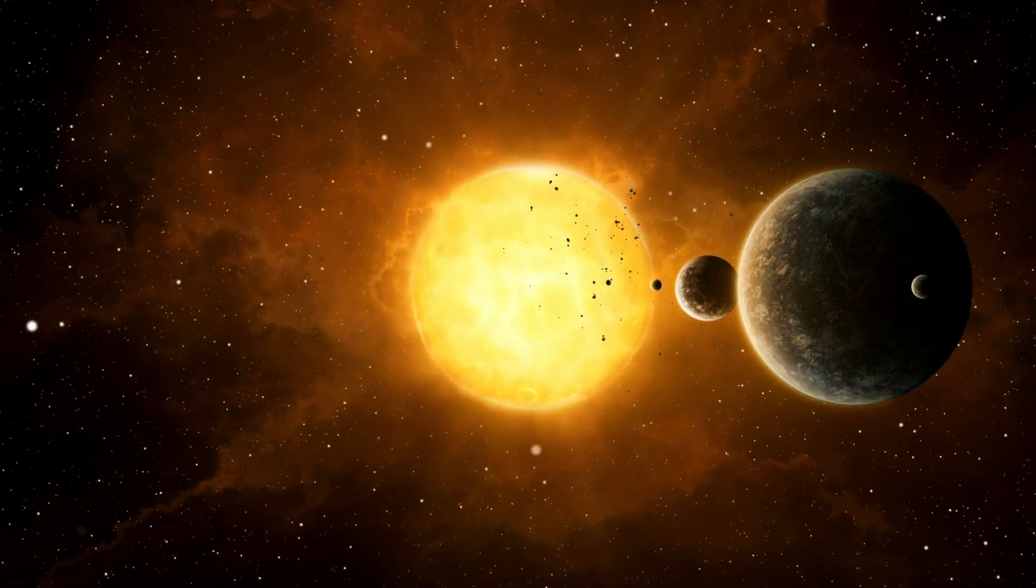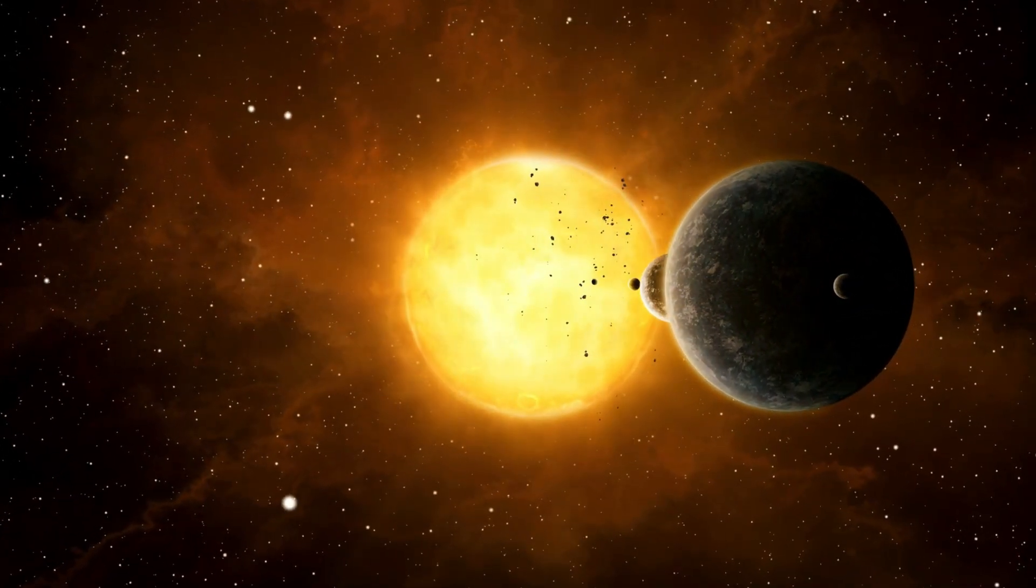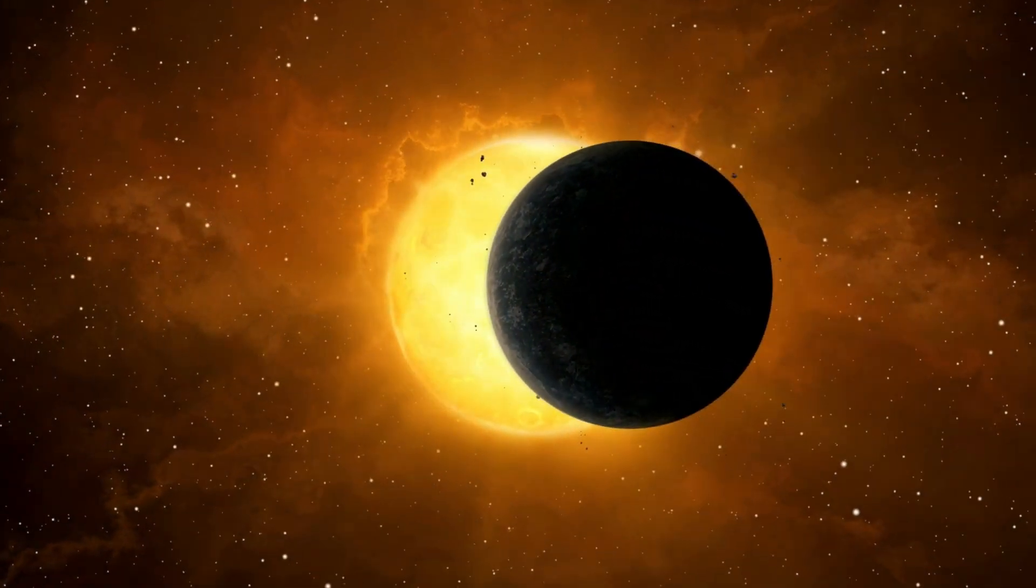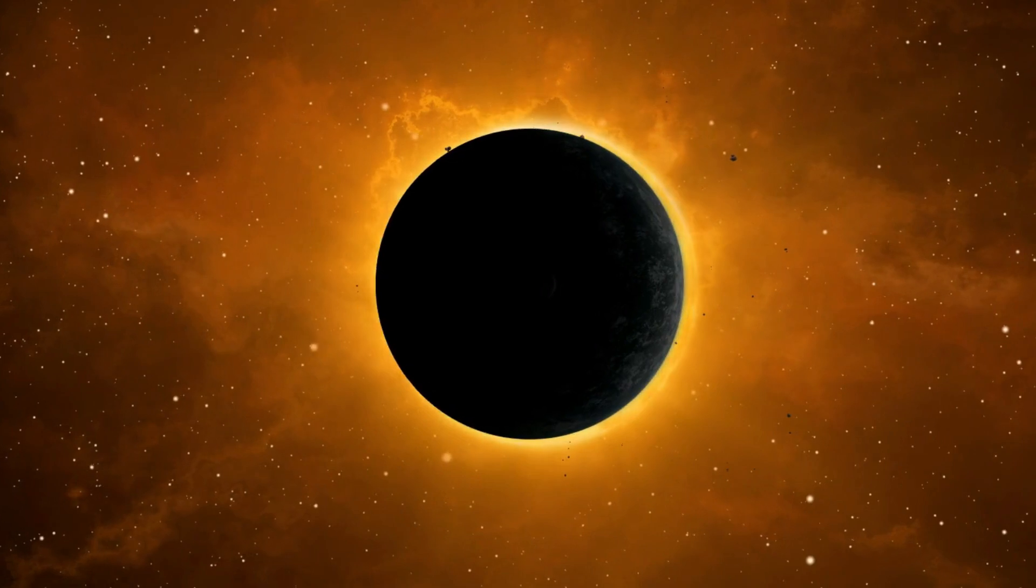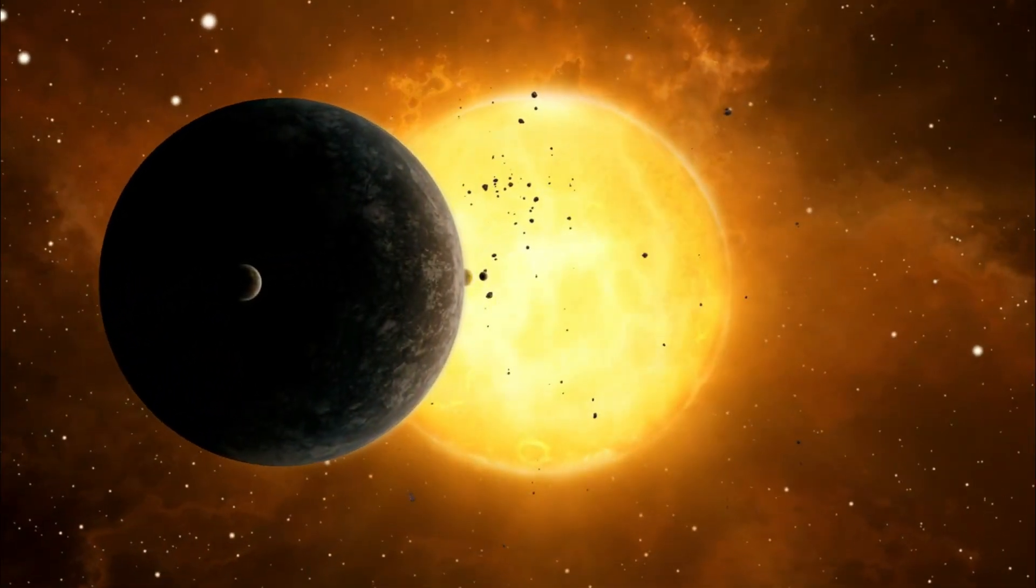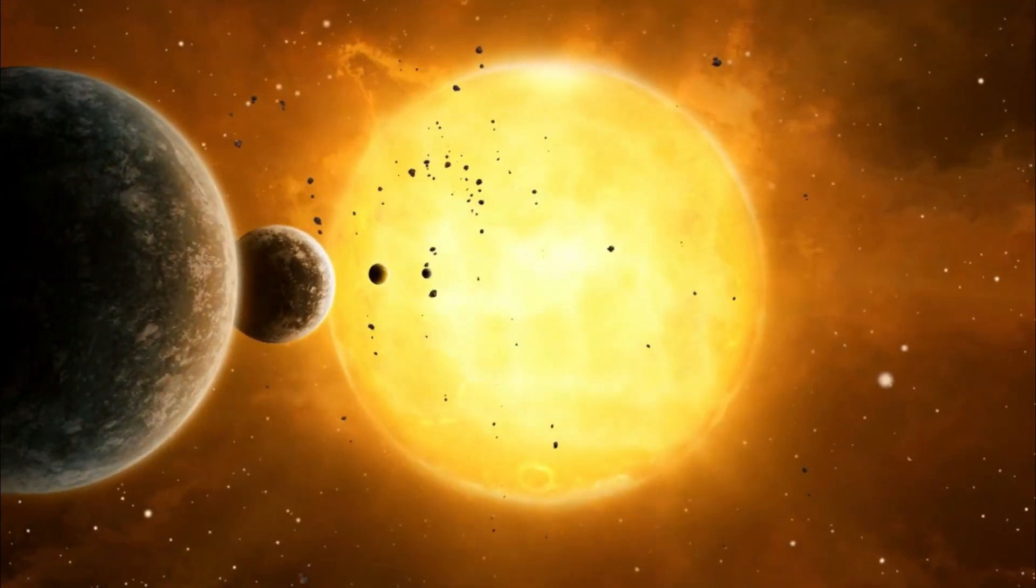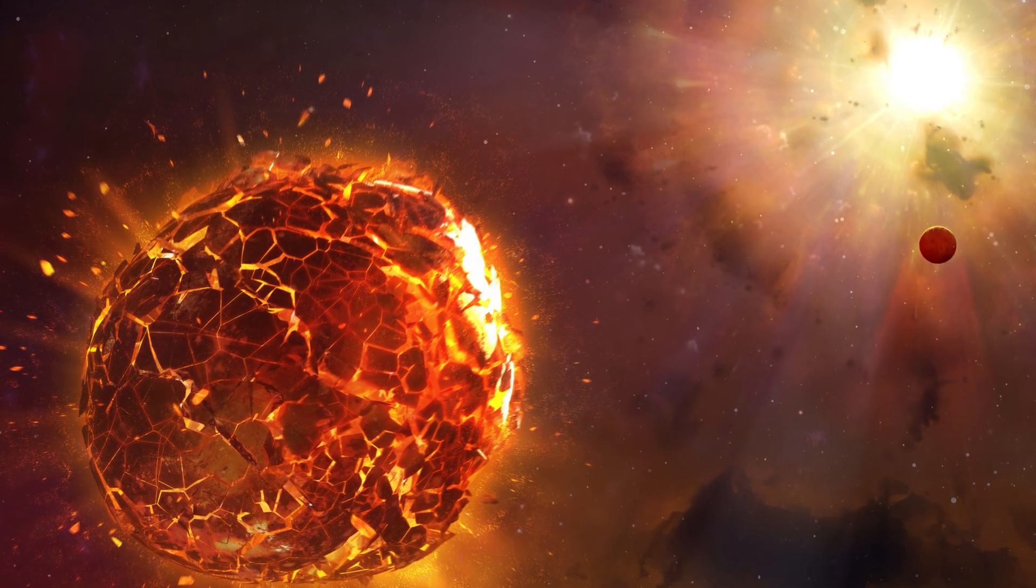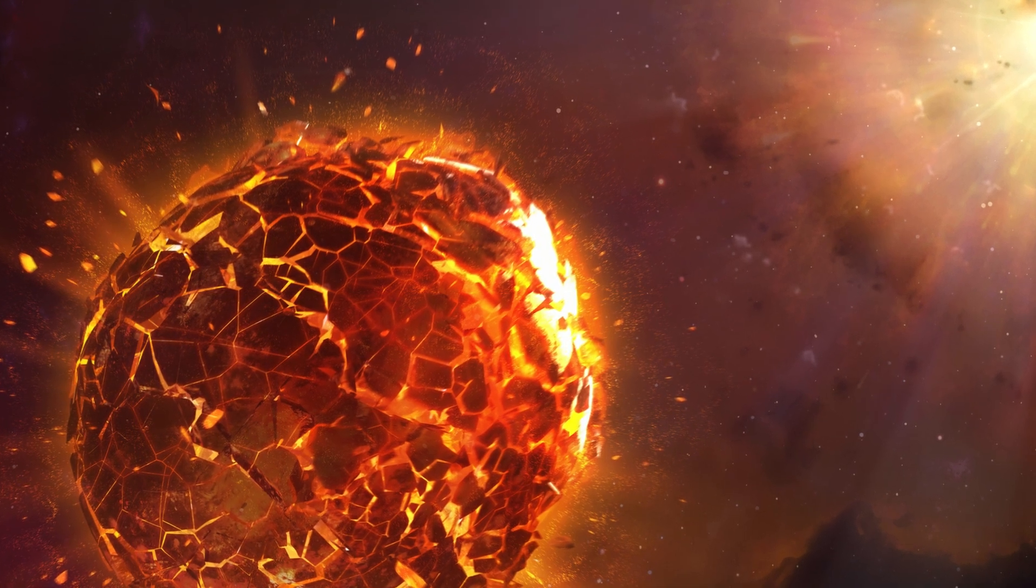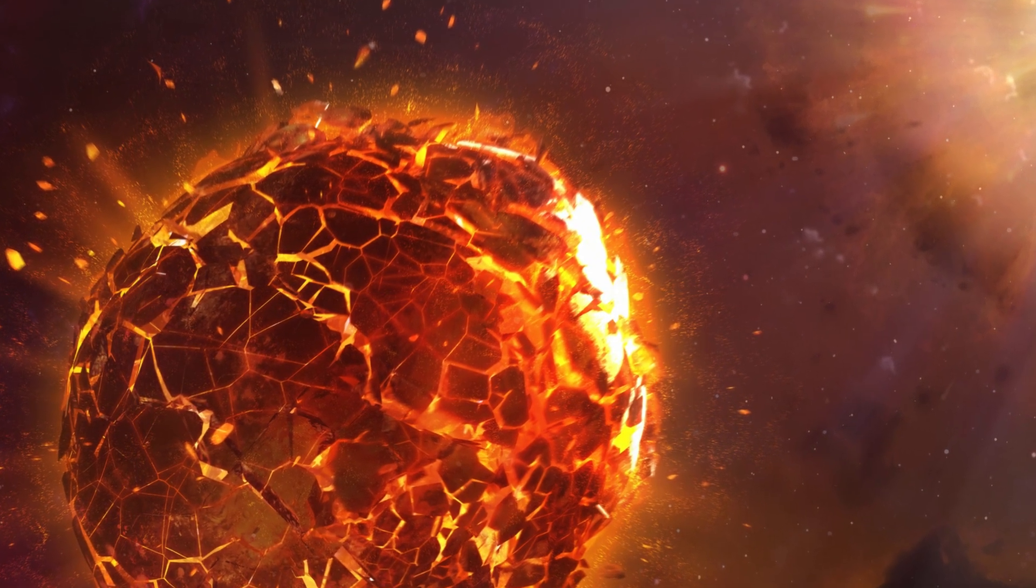Betelgeuse, the fiery red star in Orion's shoulder, is a cosmic time bomb waiting to explode. This aging supergiant, hundreds of times larger than our sun, is in its final death throes, burning through its remaining fuel at a furious pace. Astronomers know it's destined to go supernova—the only question is when.